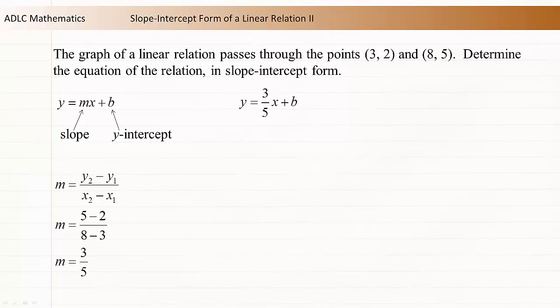We know that substituting either the coordinates (3, 2) or the coordinates (8, 5) into our equation must make it true. This means we can substitute one set of coordinates into the equation and solve for b. Let's use the point (3, 2).